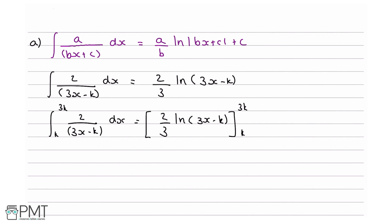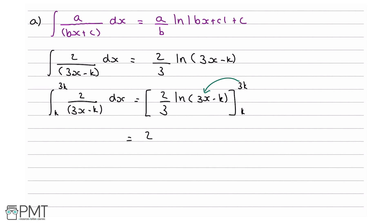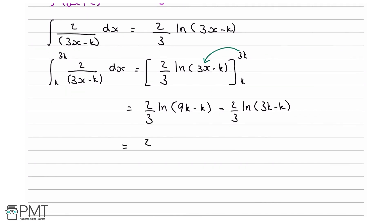What we need to do is substitute first our 3k into x. We end up with 2 over 3 ln of (3 times 3k minus k) — so 9k minus k — and then subtract, because when going between the limits, we subtract 2 over 3 ln(3k minus k). So this equals 2 over 3 times ln 8k minus ln 2k, since 9k minus k is 8k and 3k minus k is 2k.